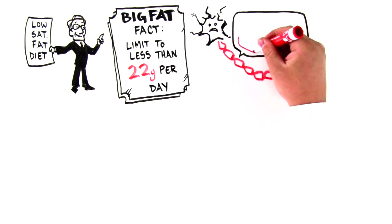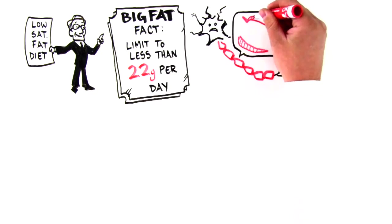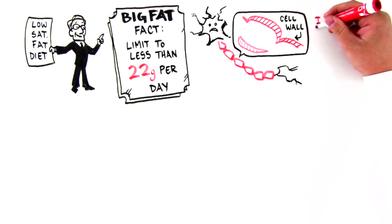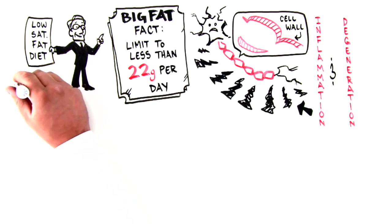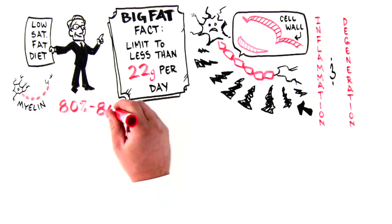Well, fats make up the cell wall, and the types of fats we eat affect the way cells behave in our body. MS is all about inflammation and degeneration of cells, particularly myelin, which is made up of 80 to 85% fat.